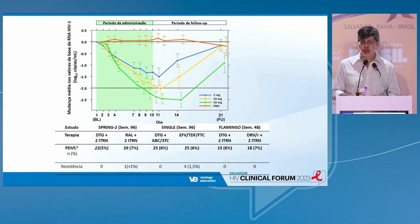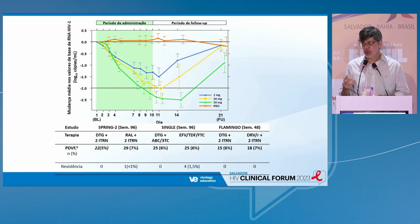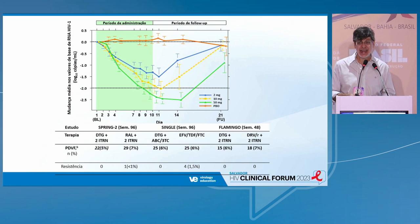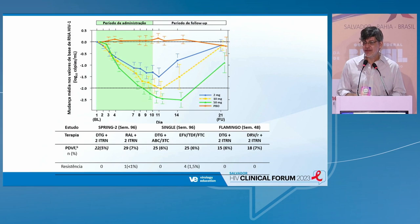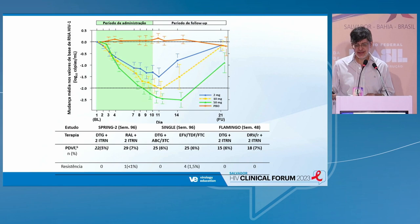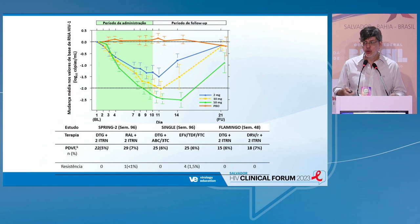Integrase inhibitors — specifically dolutegravir — showed important things that made some researchers very excited about the possibility of creating a regimen with a lower number of drugs. The power of integrase inhibitors is associated with a decrease of 2.5 logs within the first days; viral load drops more than 99% in less than two weeks. The barrier against resistance seems very close to that of ritonavir-boosted protease inhibitors. In development studies — FLAMINGO, SPRING — dolutegravir failure was not associated with resistance at all.